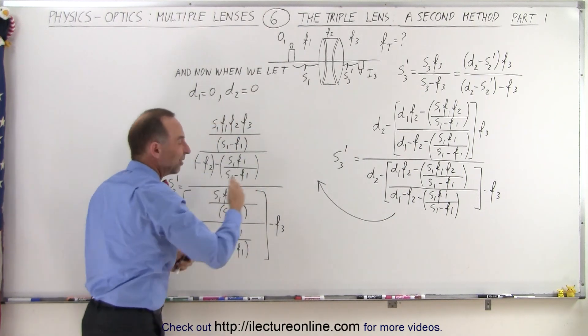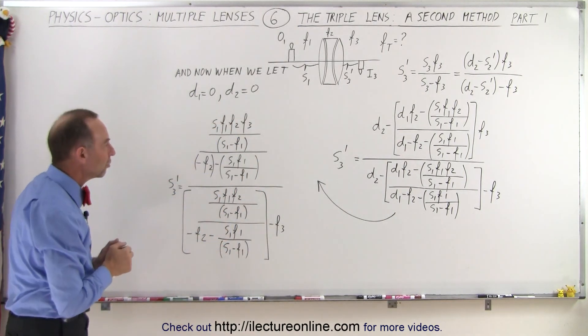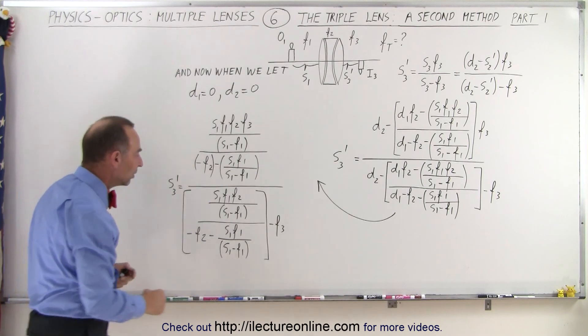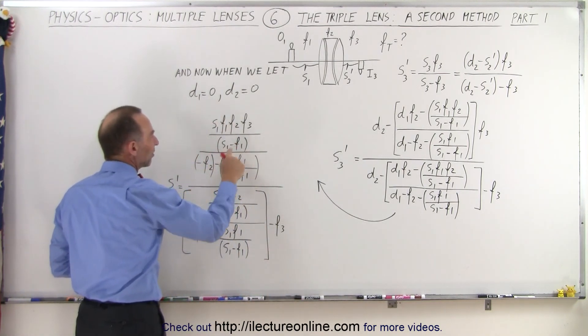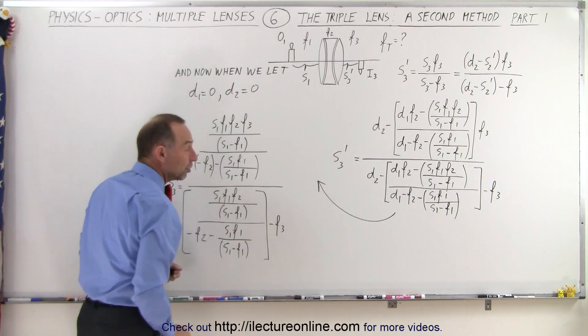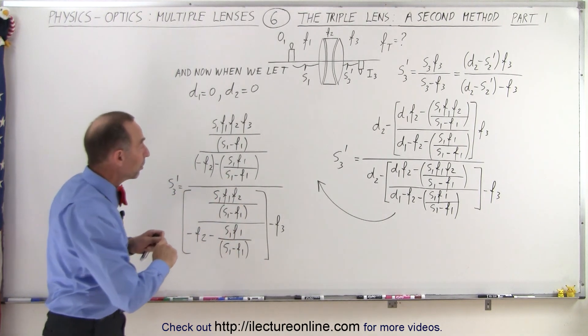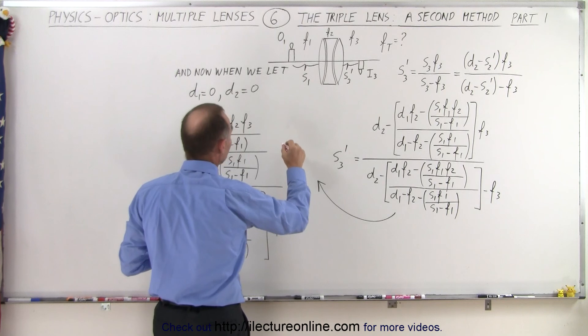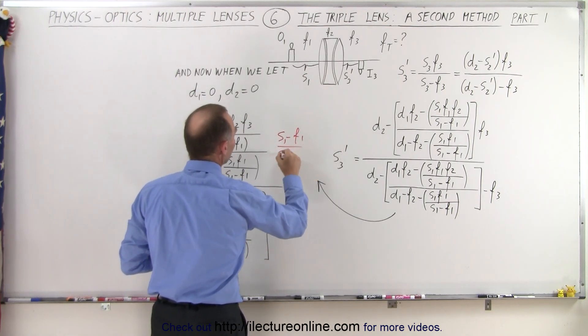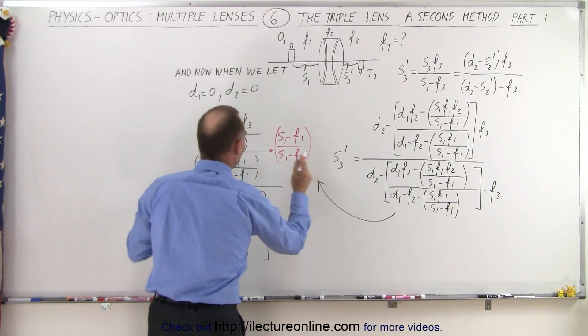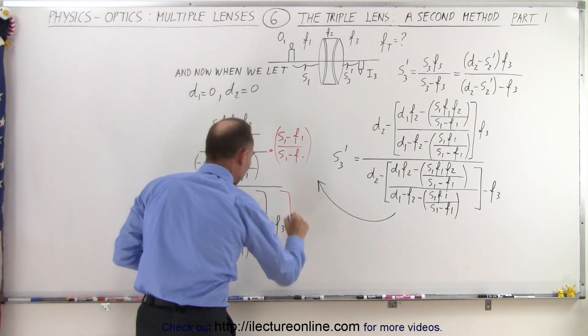So we end up with a somewhat simplified equation. To simplify it even a little bit further, because we notice we have an S1 minus F1 in each of the four denominators here, we can actually multiply the numerator and the denominator by the quantity S1 minus F1 divided by S1 minus F1. So we're going to multiply this by this, and then we're going to do it again over here.